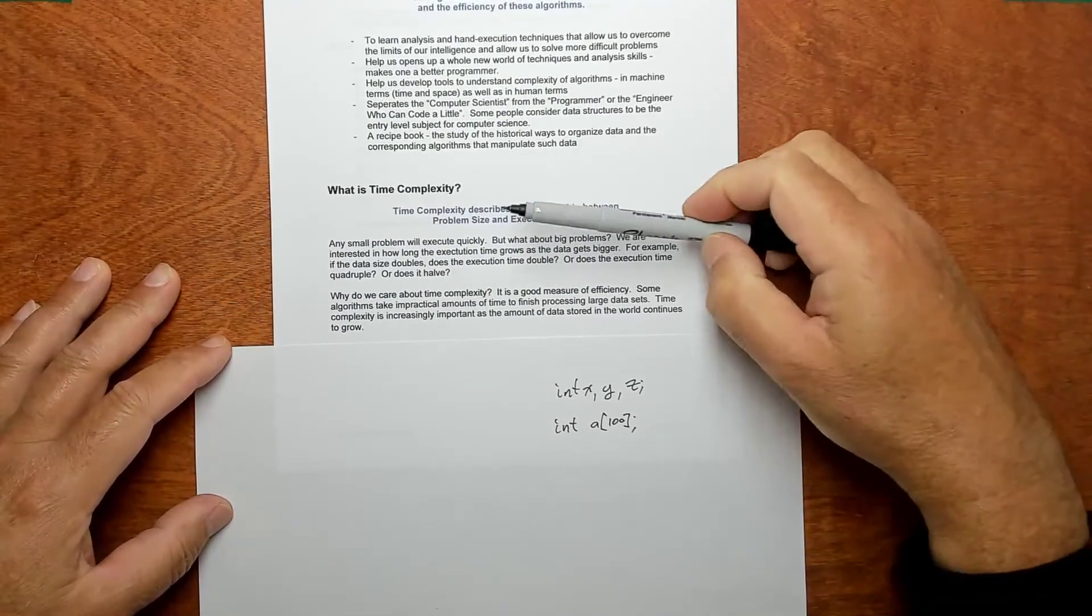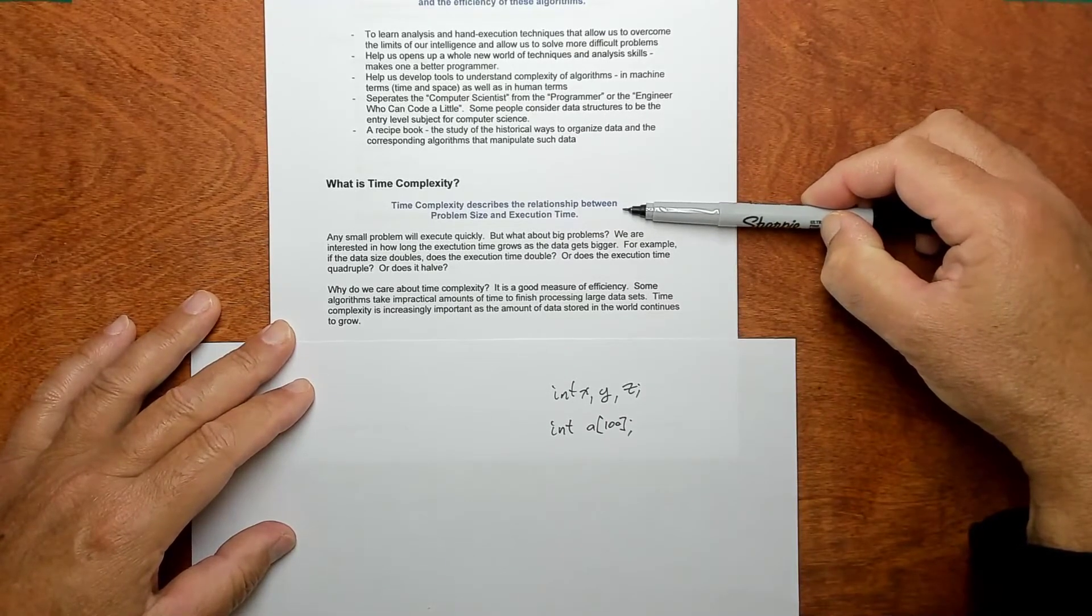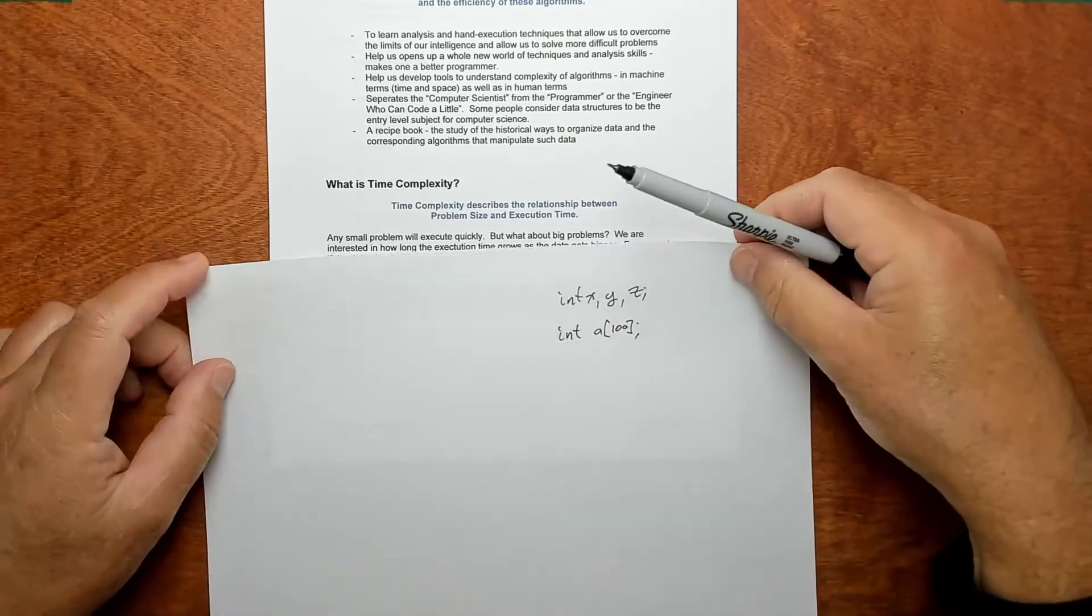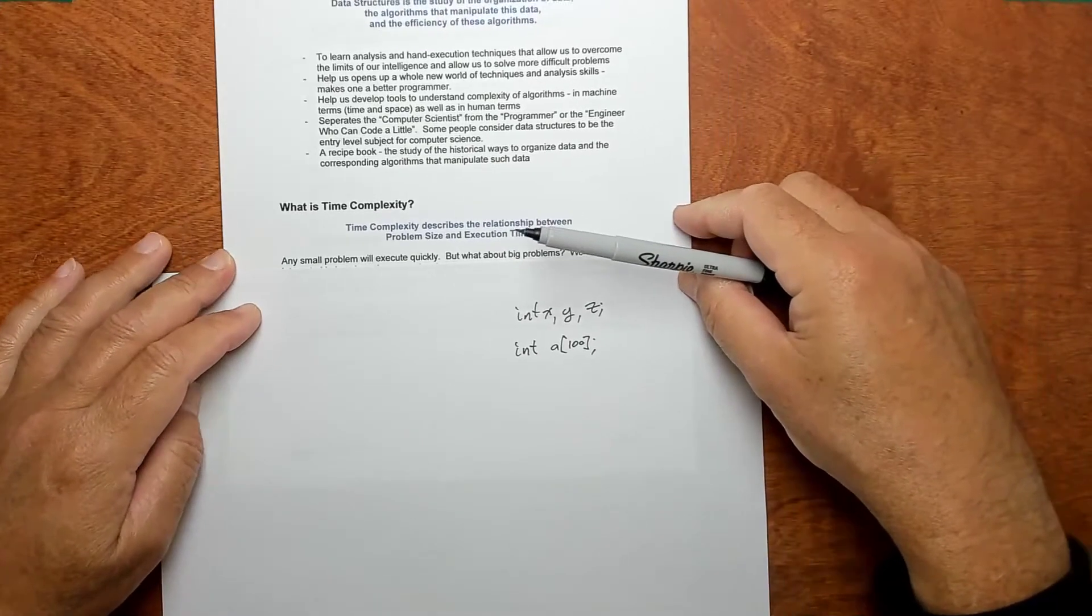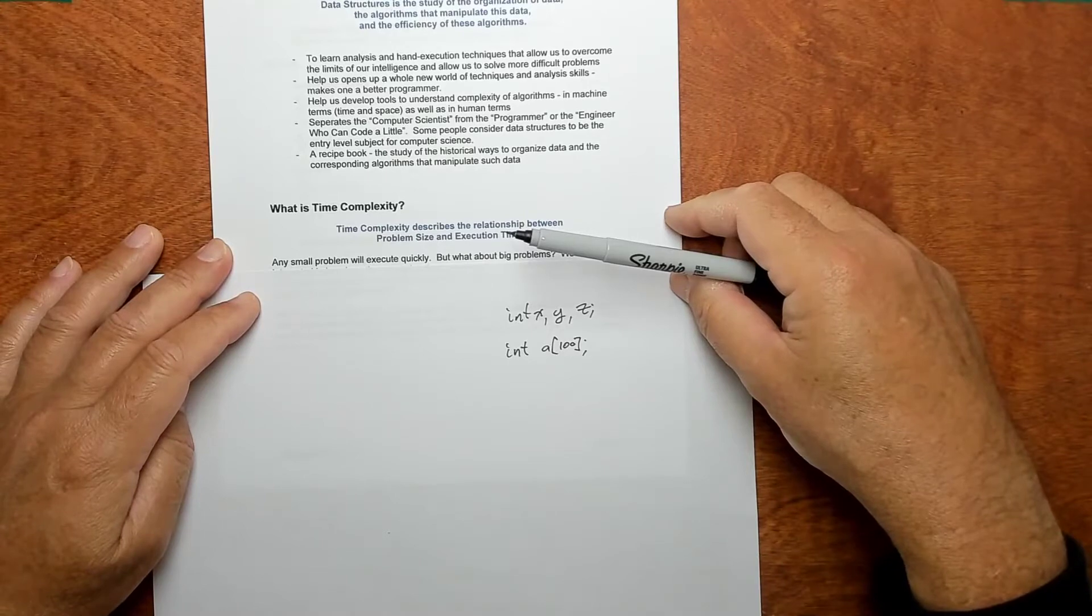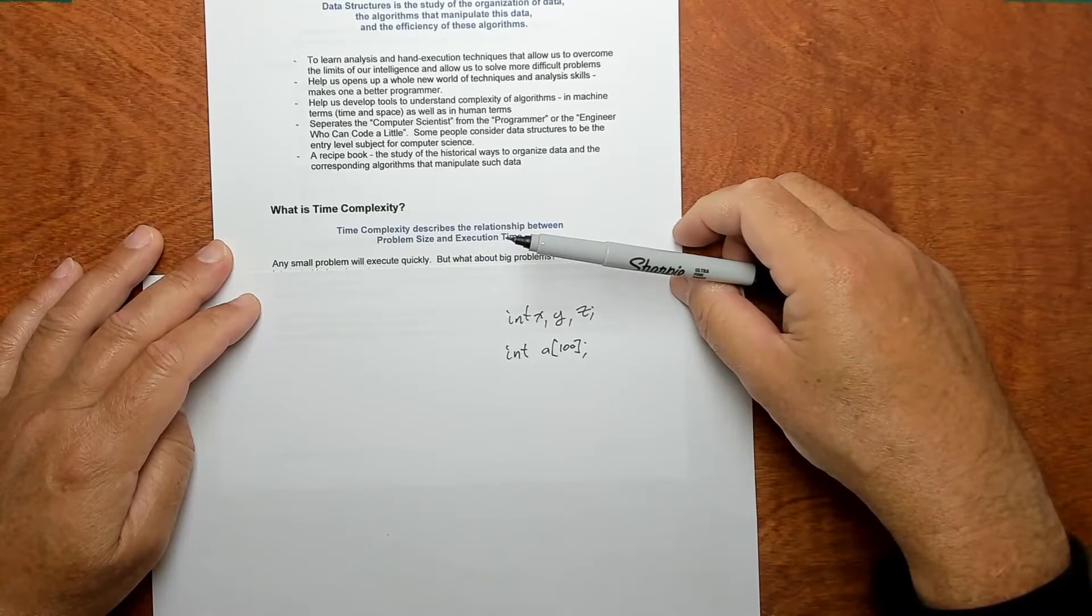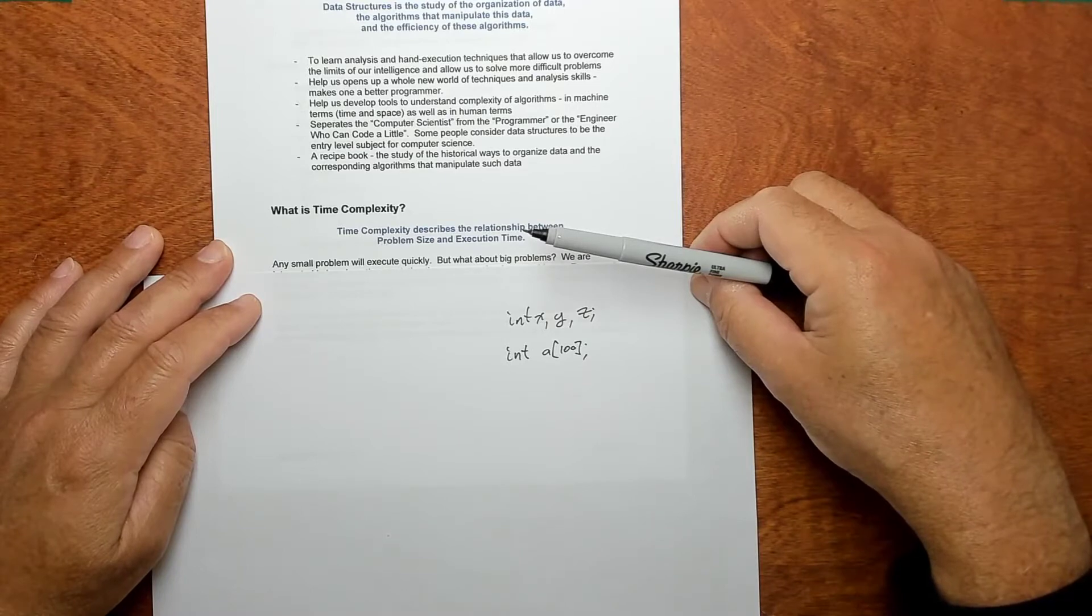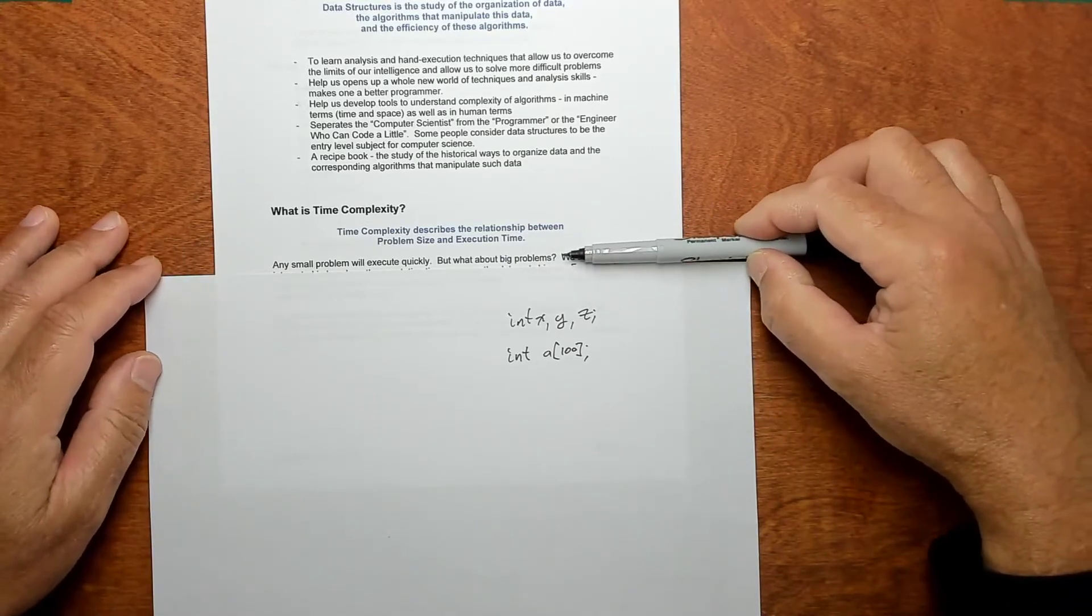The main thing we're going to deal with is this thing called time complexity. Here's a nice concise definition. Time complexity describes the relationship between problem size and execution size. Any small problem will execute quickly. Like, if you have ten numbers and you're trying to find the biggest one, it doesn't matter how you do that. Modern computers are so fast that for ten numbers, a hundred numbers, it doesn't matter what kind of algorithm you use, it's going to execute pretty quickly. But when you get to really big problems, the data sets that are being collected are gigabytes and gigabytes, terabytes, petabytes.